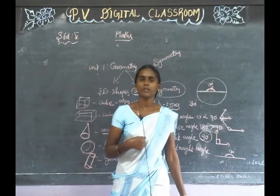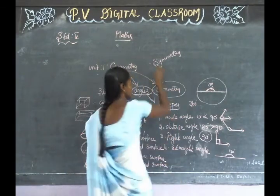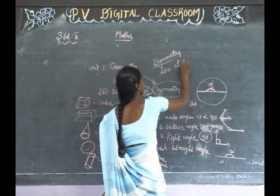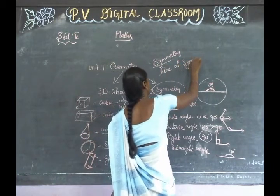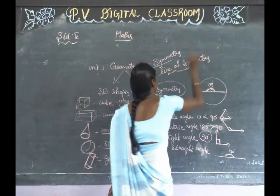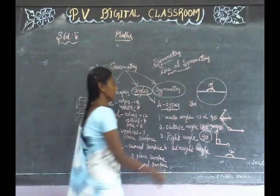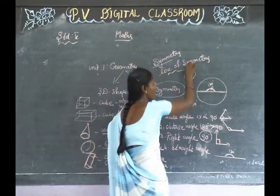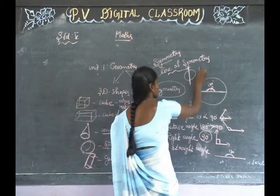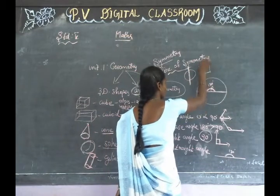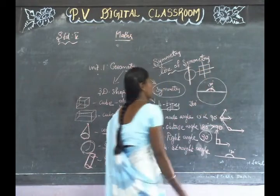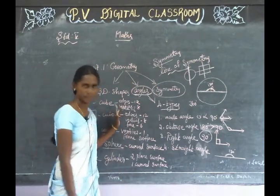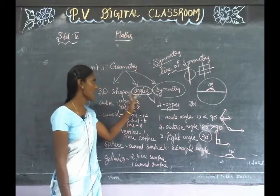In the center, we have a line of symmetry. For example, we have a circle — we divide it in two. We have a line of symmetry. On a square, how many lines of symmetry? Two lines of symmetry. So 3D shapes and angles and symmetry are the topics of the first lesson.